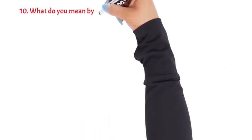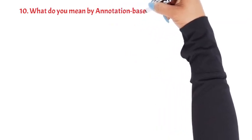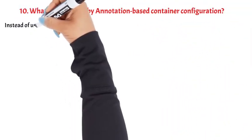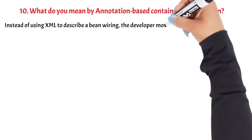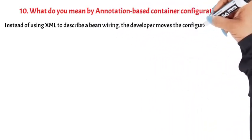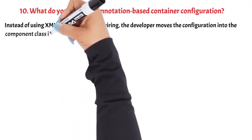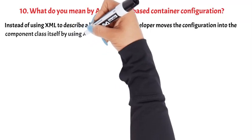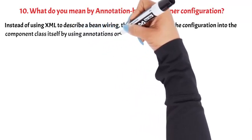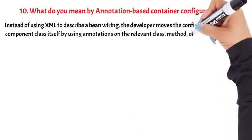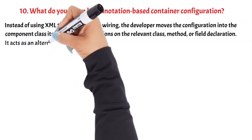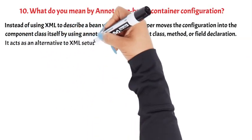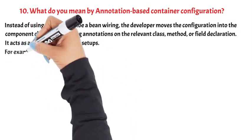Question 10: What do you mean by annotation-based container configuration? Instead of using XML to describe bean wiring, the developer moves the configuration into the component class itself by using annotations on the relevant class, method, or field declaration. It acts as an alternative to XML setups. For example.